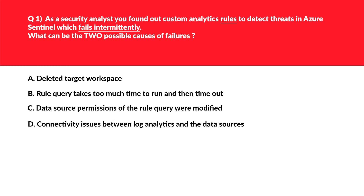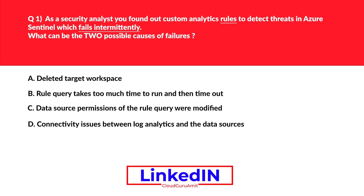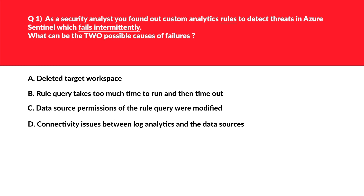A transient failure occurs due to a circumstance which is temporary and will soon return to normal, at which point the rule execution will succeed. Whereas permanent failure occurs due to a change in the condition that allows the rules to run, which without human intervention will not return to their former status.